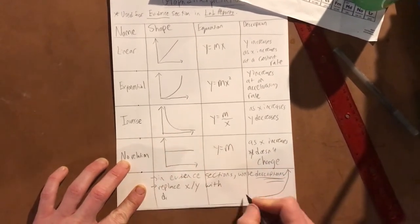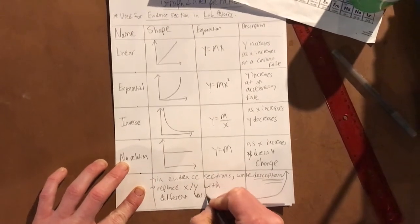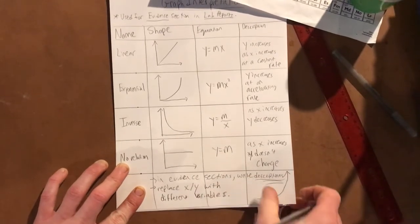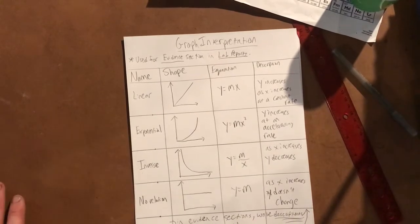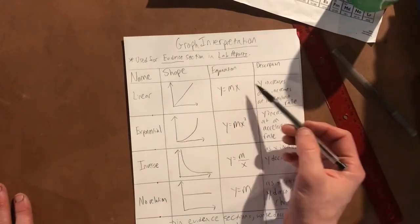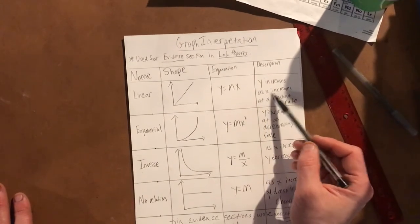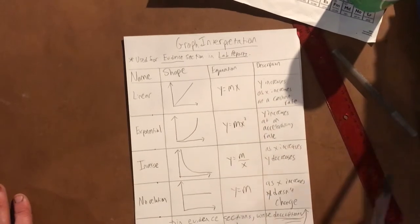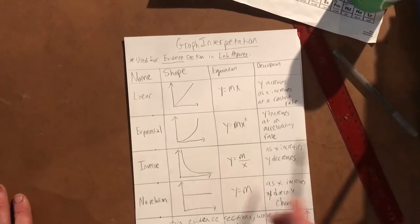Replace x and y with different variables. Maybe we're seeing something like distance-time graphs, so we might say 'as distance increases, as time increases at a constant rate.' Instead of saying x and y, we're gonna say distance and time if it was a distance-time graph.